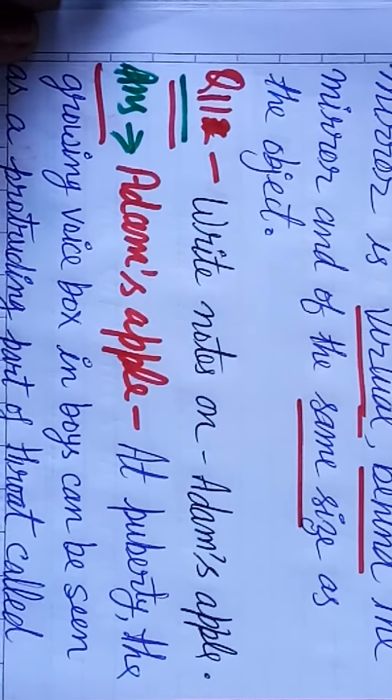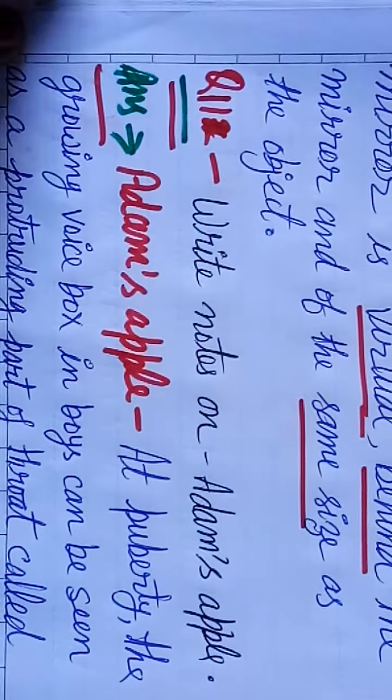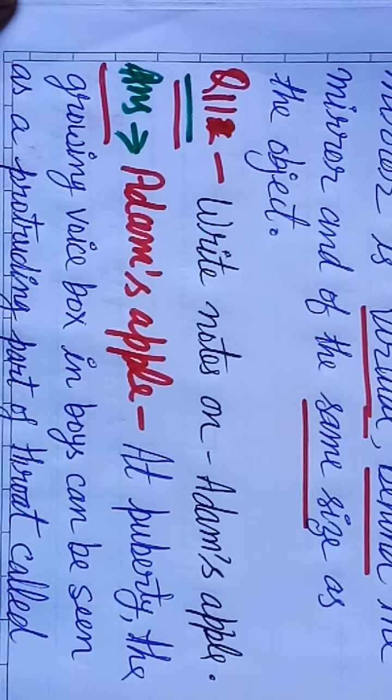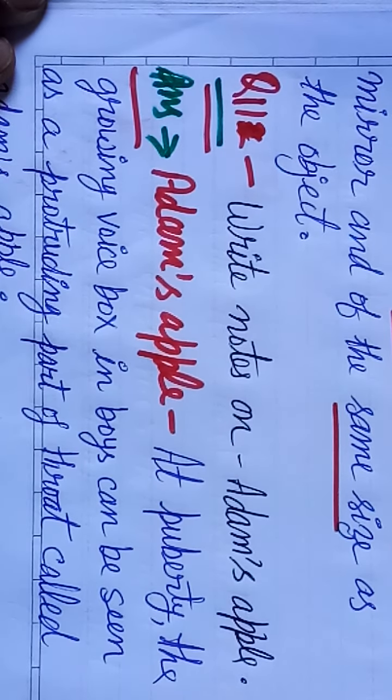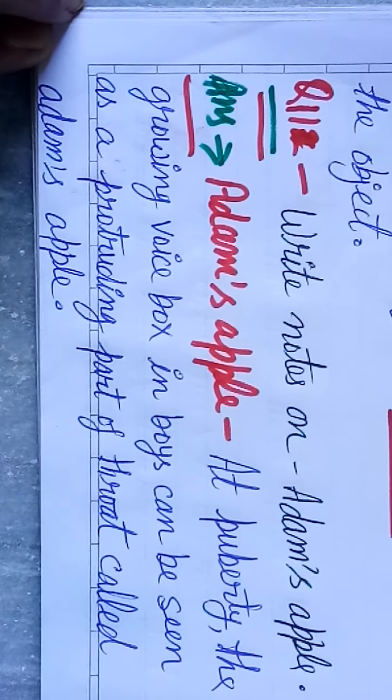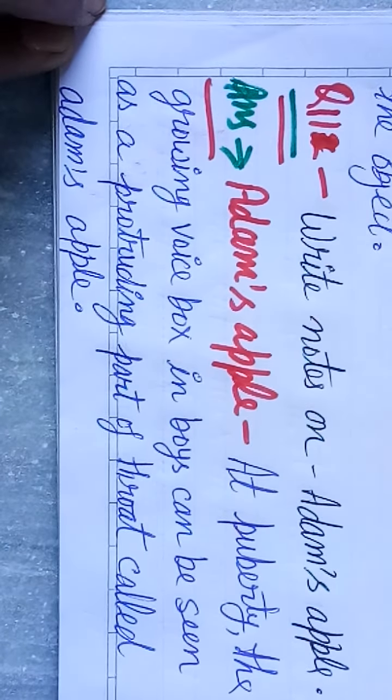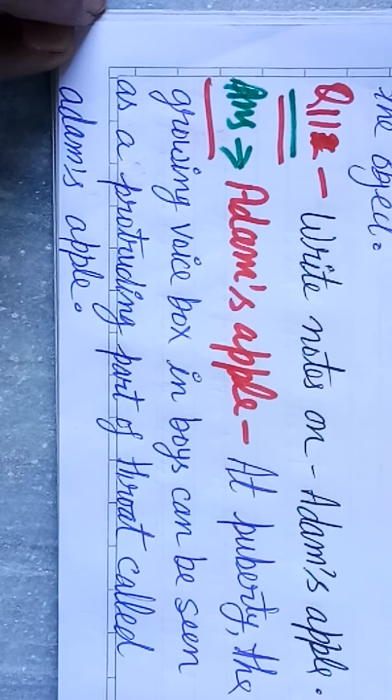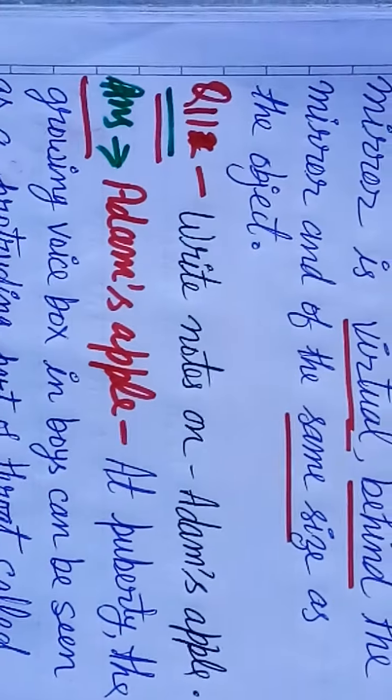Question eleven. Write notes on Adam's apple. At puberty, the growing voice box in boys can be seen as a protruding part of throat called Adam's apple.